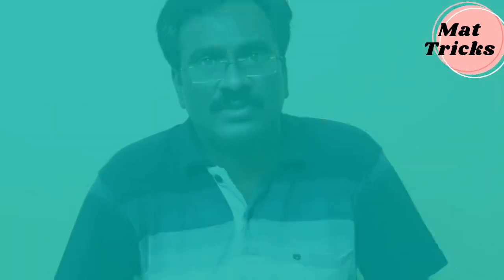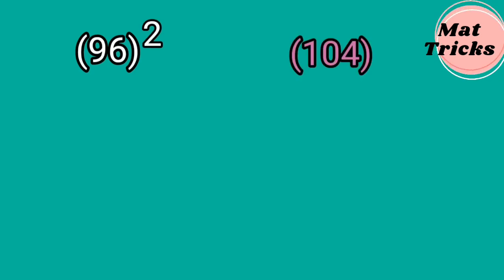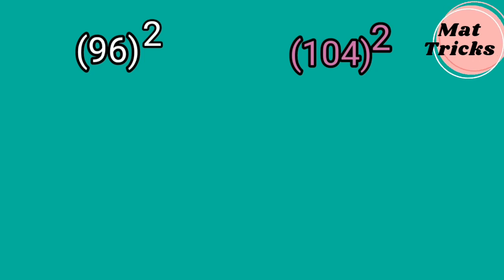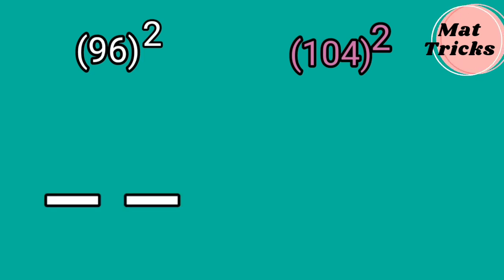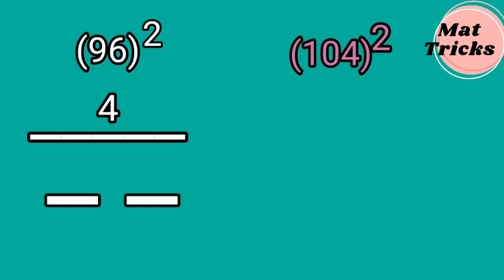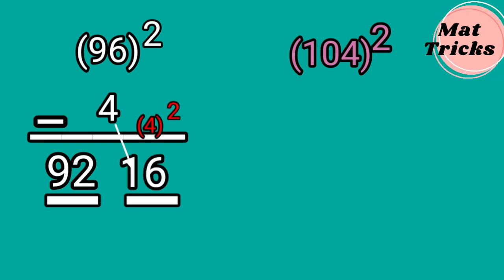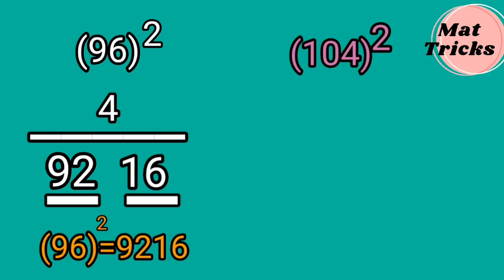Now we will see some more examples. I will take 96 whole square and 104 whole square — one number is below 100 and one number is above 100. First, take 96 whole square. Write 2 blanks. The difference between 100 and 96 is 4, so write 4 under 96. Since 96 is less than 100, we subtract: 96 minus 4 is 92. Write it in the first blank. The second operation is square: 4 square is 16 in the second blank. So 96 whole square is 9,216.